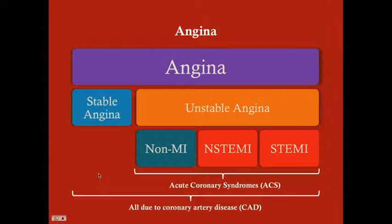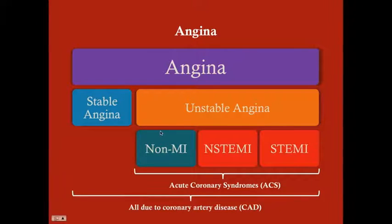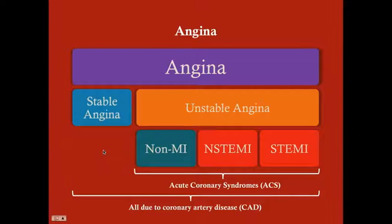Here's a visual of how these terms relate. Angina is the umbrella: stable angina, unstable angina, and Prinzmetal's angina. Under unstable angina, if it's not an MI it's just unstable angina; if it is an MI, it's either NSTEMI or STEMI. All of these — unstable angina, NSTEMI, and STEMI — constitute acute coronary syndrome. All are due to coronary artery disease, except Prinzmetal's angina, which is not included in this diagram.